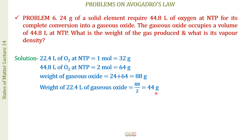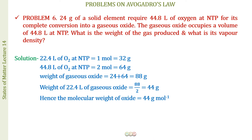We have this at NTP, and at NTP 22.4 liters of any gas equals 1 mole. So 1 mole of this gaseous oxide is 44 g, meaning the molar mass of the gaseous oxide is 44 g/mol.